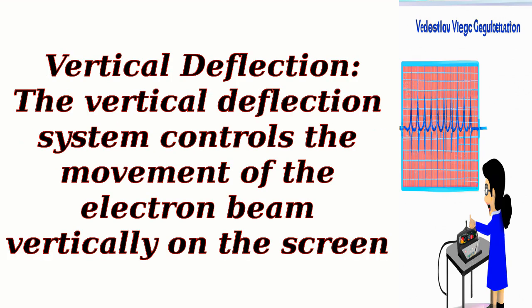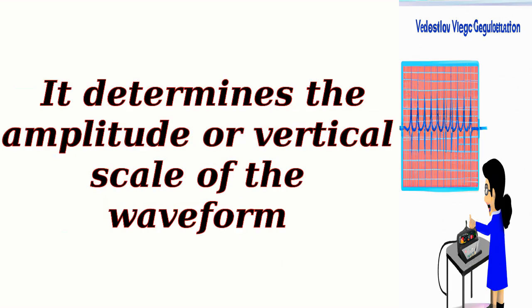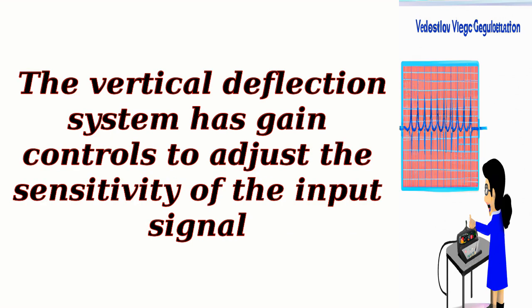Vertical Deflection: the vertical deflection system controls the movement of the electron beam vertically on the screen. It determines the amplitude or vertical scale of the waveform. The vertical deflection system has gain controls to adjust the sensitivity of the input signal.